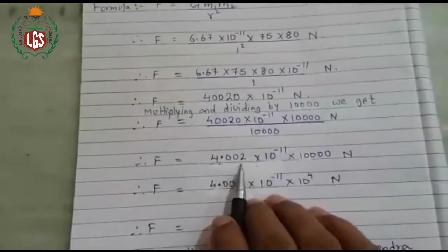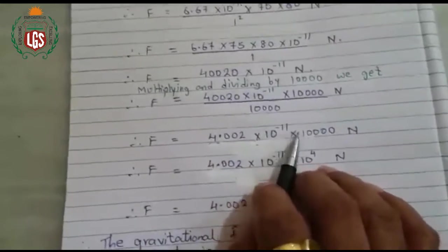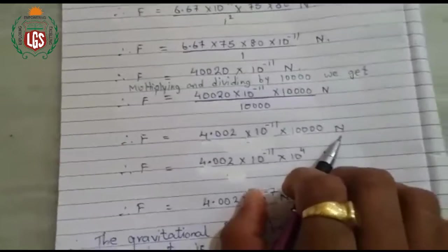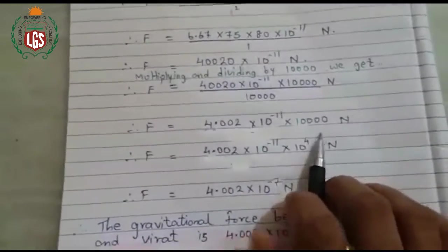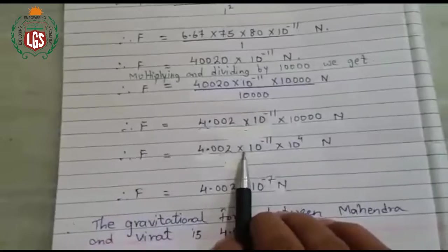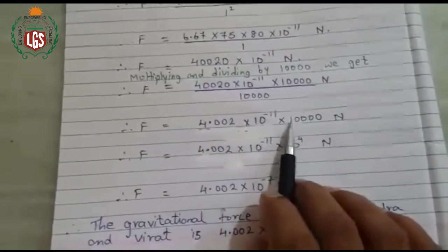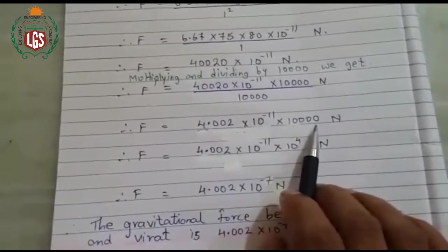The answer will be 4.002 into 10 raise to minus 11. And this 10,000 will remain as it is and Newton. After that, force is equal to 4.002 into 10 raise to minus 11 into, now 10 raise to 4.